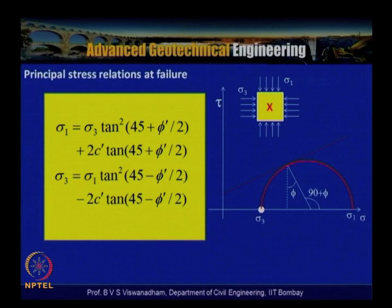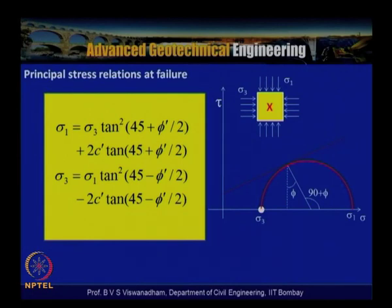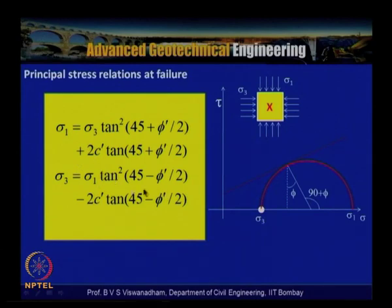The principle stress relations at failure for the general case (sigma_1 > sigma_3) are: sigma_1 = sigma_3 * tan²(45 + phi/2) + 2c * tan(45 + phi/2), and when sigma_3 is the major stress: sigma_3 = sigma_1 * tan²(45 - phi/2) - 2c * tan(45 - phi/2).